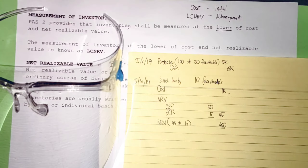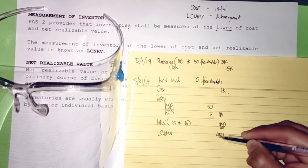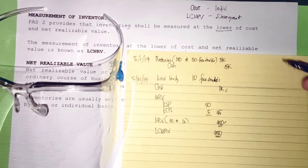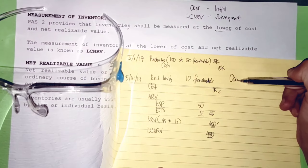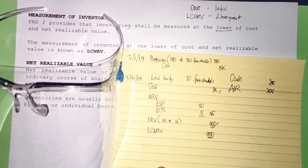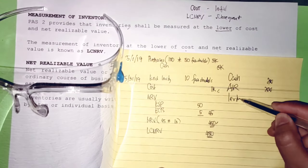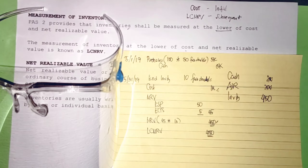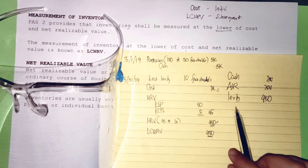Applying PAS 2 — lower of cost and net realizable value — cost is ₱1,000 and NRV is ₱450, so LCNRV = ₱450. On the May 31 balance sheet, after cash and accounts receivable, inventory will appear at ₱450.